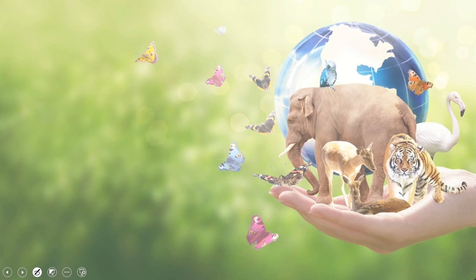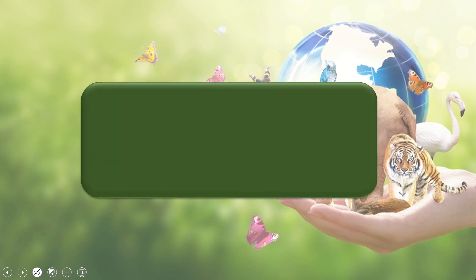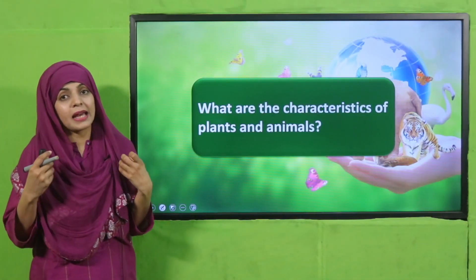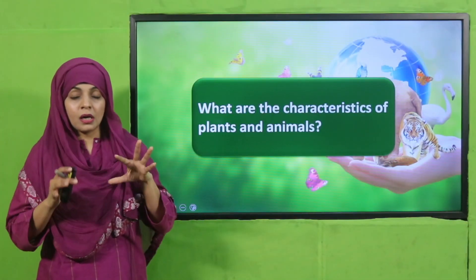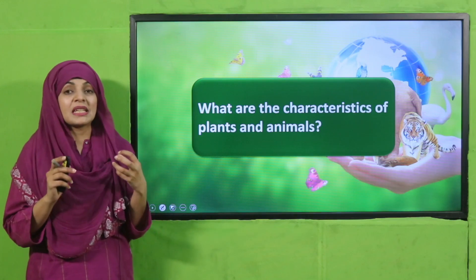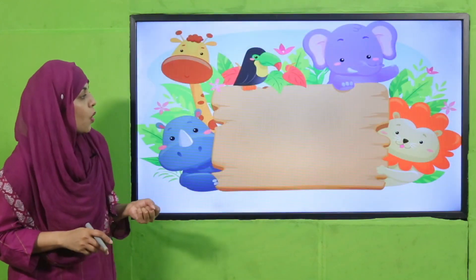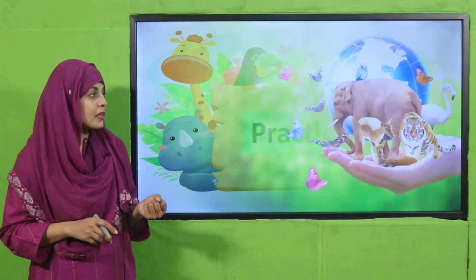Now let's move forward towards evaluation. Listen to the questions and answer them orally. What are the characteristics of plants and animals? Movement, growth, feeding, respiration, excretion, sense and respond. These are the different characteristics of plants and animals, due to which we can say that both are living things.